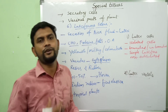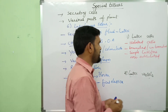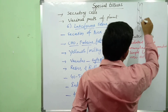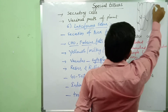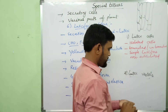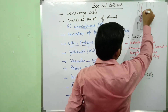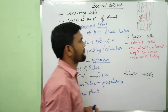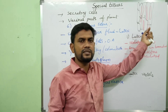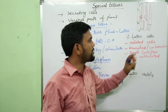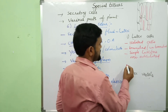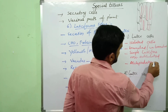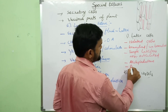Non-articulated laticiferes are mainly associated with phloem. They occur in different parts of the plant body but are mainly associated with phloem. They are isolated or single cells, with branches present or absent. They are found in Asclepiadaceae and Apocynaceae members.